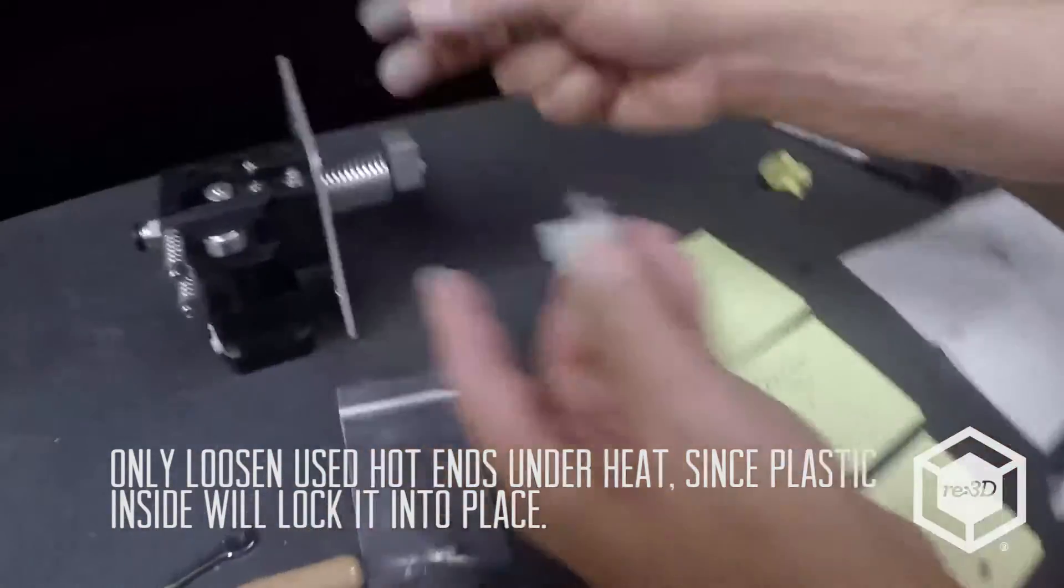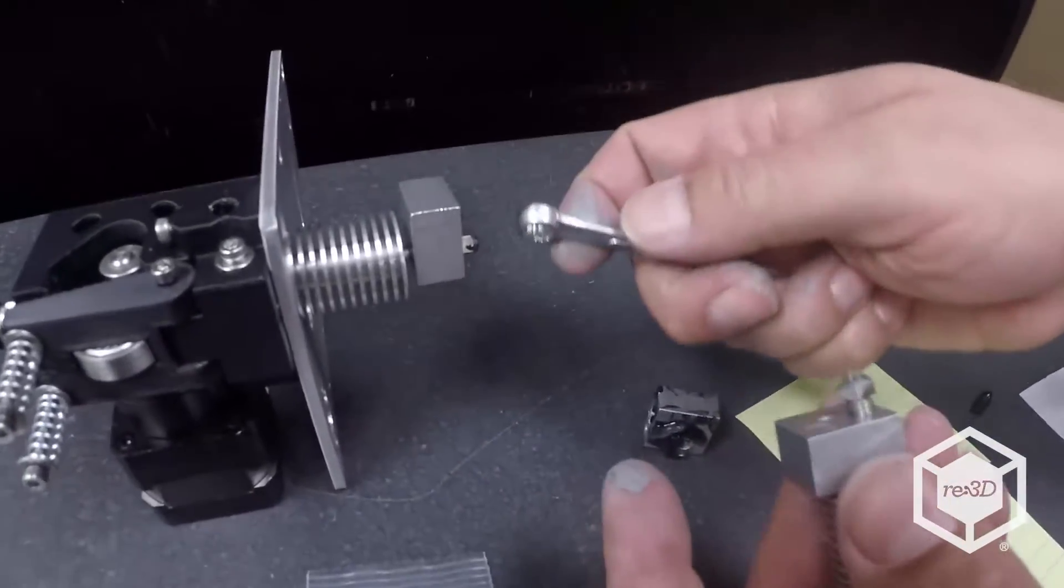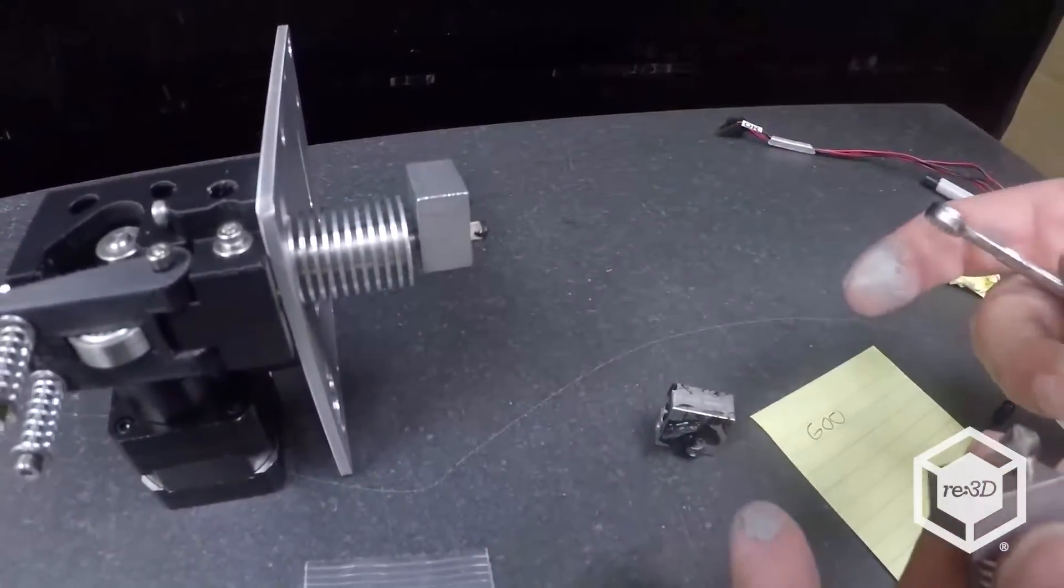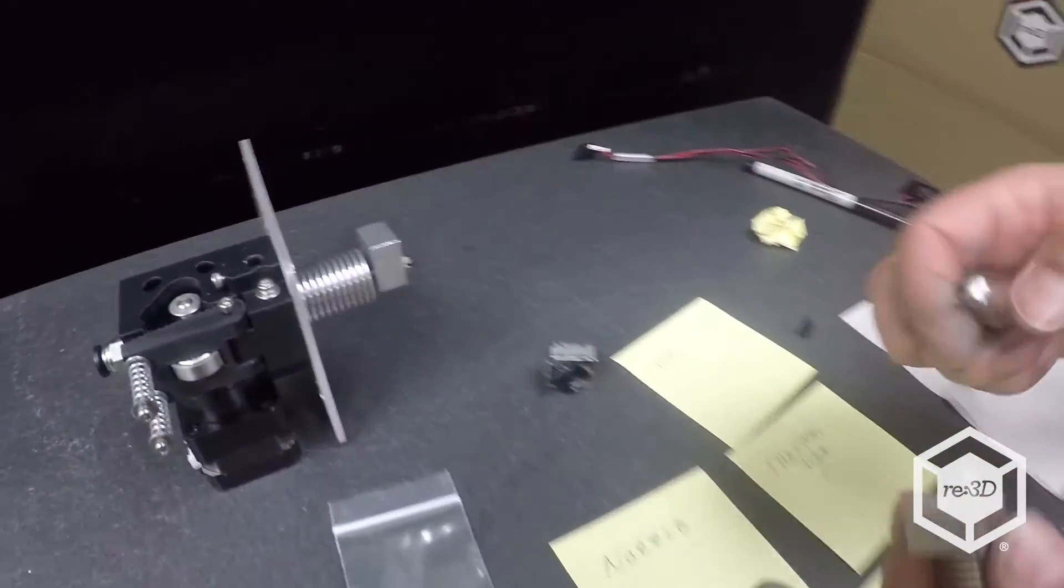So just by holding it you can unscrew the nozzle and the nozzle comes out. Same is true if you're on the bot. This is kind of the configuration if you're on the bot you can swap the nozzle out without even taking it off the bot. Go to a bigger nozzle or whatever you want to do.